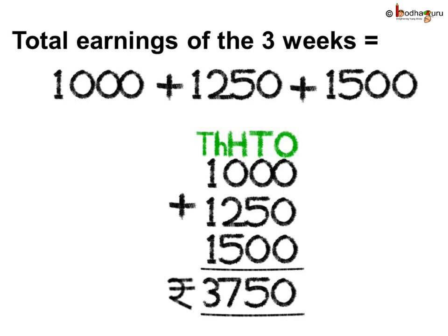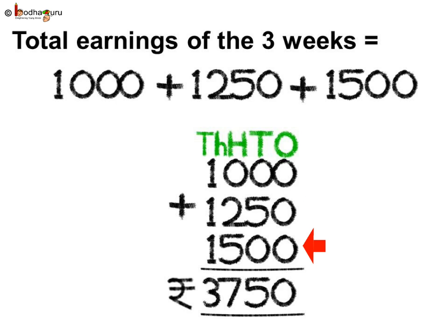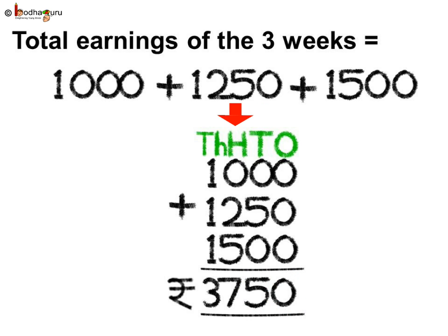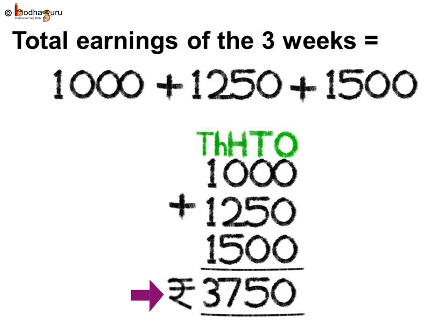Let us add 1000 plus 1250 plus 1500. Starting from the 1's position: 0. 10's position: 5. 100's position: we have to add 5 plus 2 which is 7. Now coming to the 1000's position: 1 plus 1 plus 1 which is 3. So this is equal to 3750.